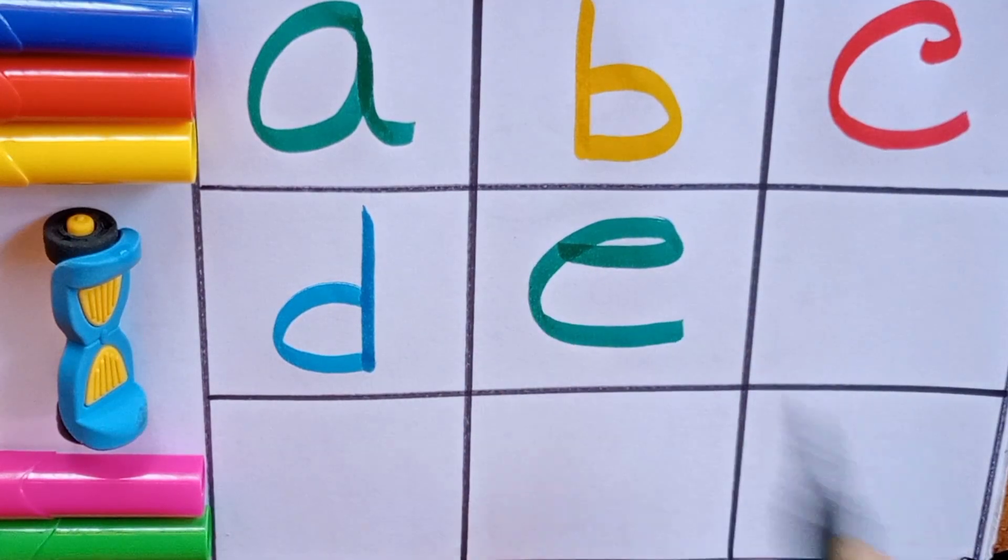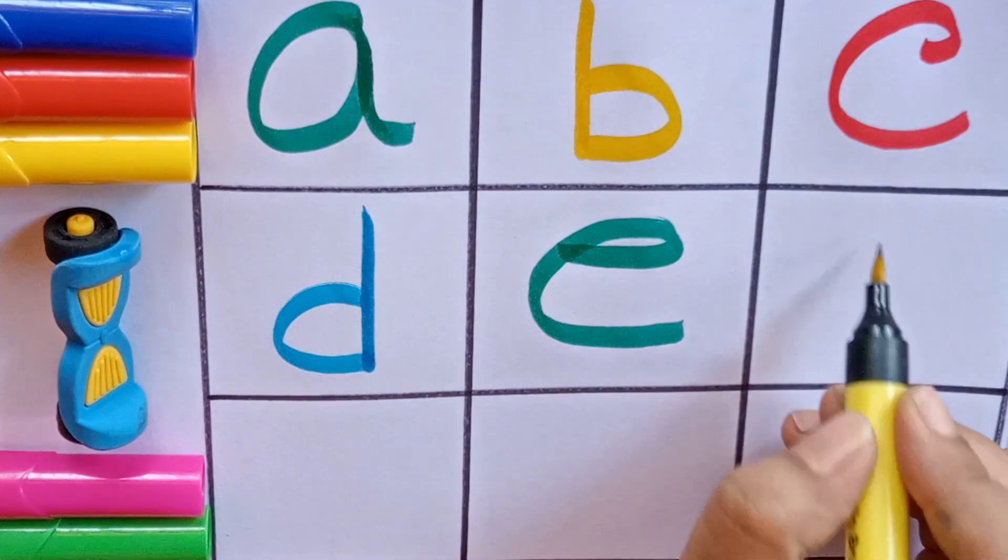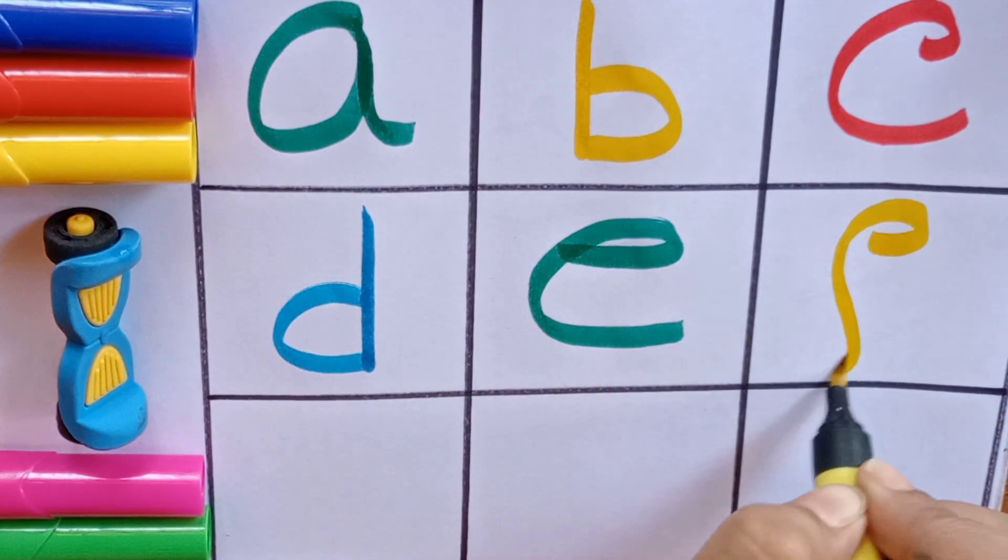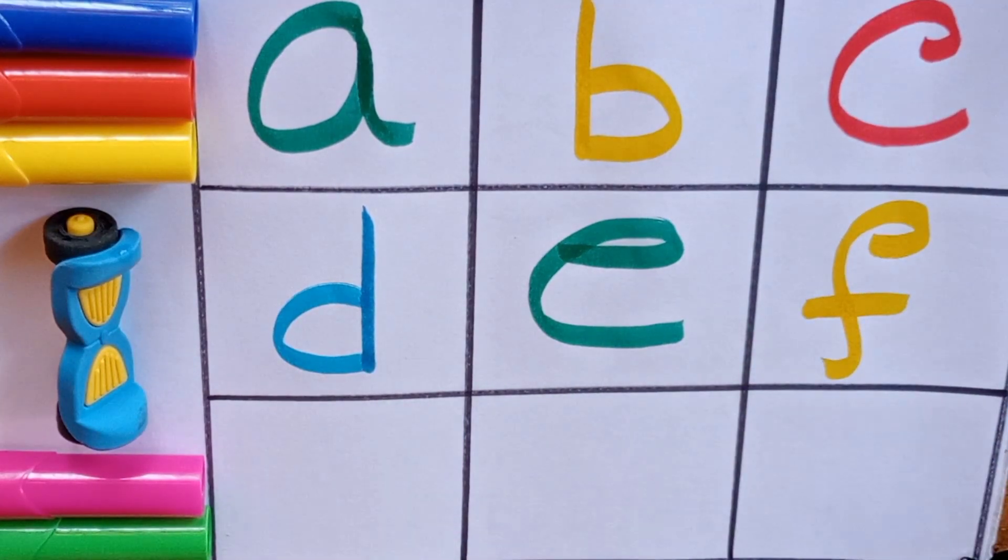E for eraser, E for also egg. Yellow. F, F for flowers, F for also forest.